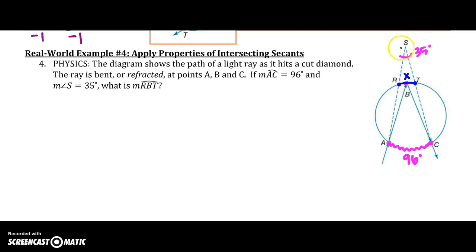So it looks like I have two secants hitting that angle or that circle at two points. So I'm going to take my angle S equals one half of my big arc measure of AC minus the measure of arc R, B, T.